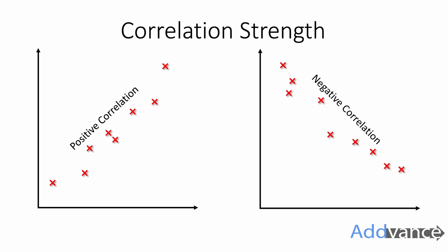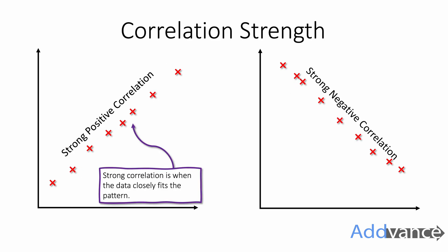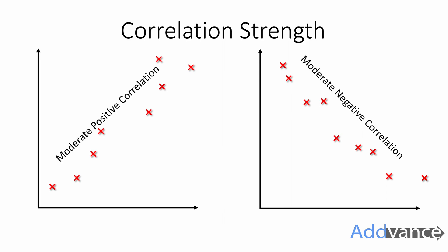Now we can talk about correlation strength. A really strong correlation will look like this, where all the data fits the trend really strongly. A moderate positive correlation or moderate negative correlation might look like this, where they're a bit more spread out, but still you can see the pattern.